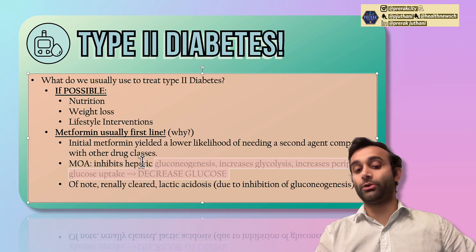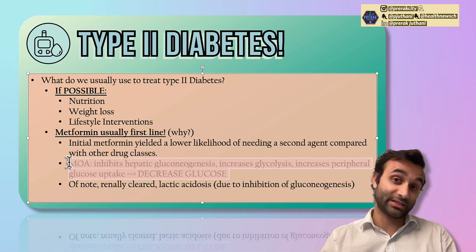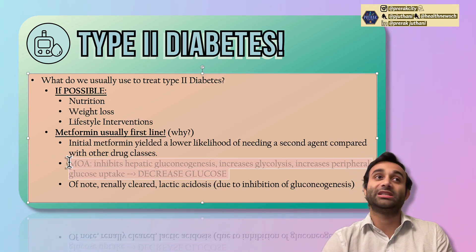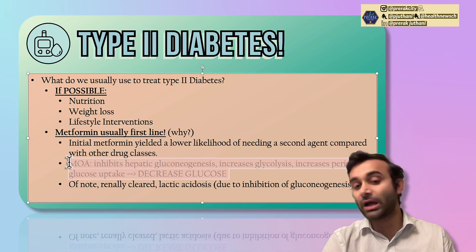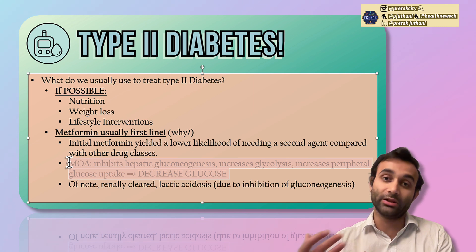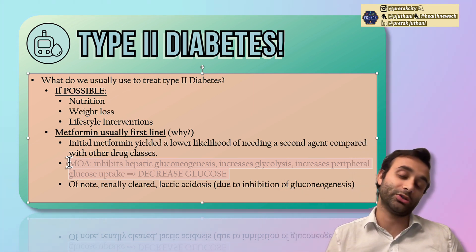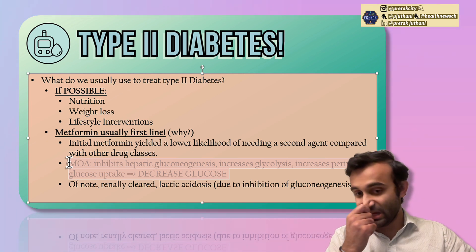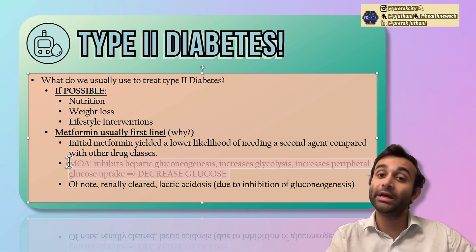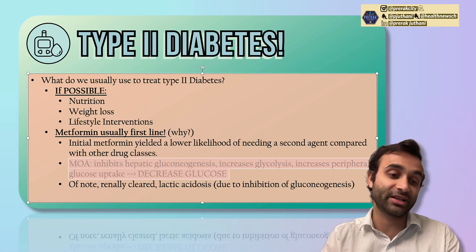The way metformin works — the biggest mechanism — is that it inhibits hepatic gluconeogenesis. Gluconeogenesis is the way our body makes more sugar, and in a diabetic state, cells can't get glucose in, so they start undergoing gluconeogenesis. By inhibiting that, you can decrease blood glucose levels. One thing to remember about metformin is that it can cause a spurious lactic acidosis, and it is cleared by the kidneys. So if someone has CKD, metformin is not the best choice because it can build up.